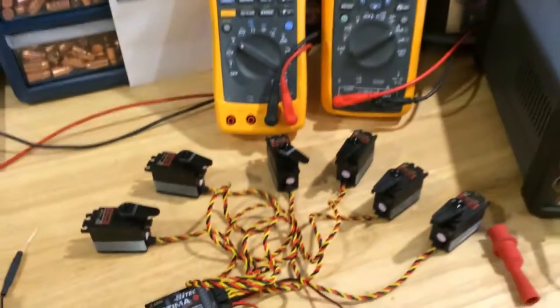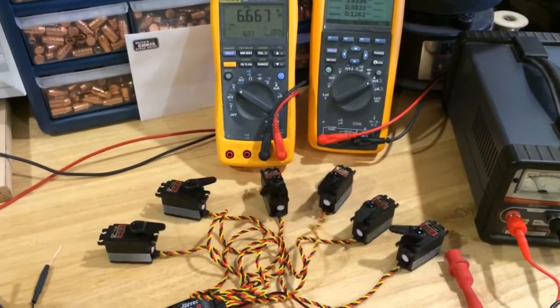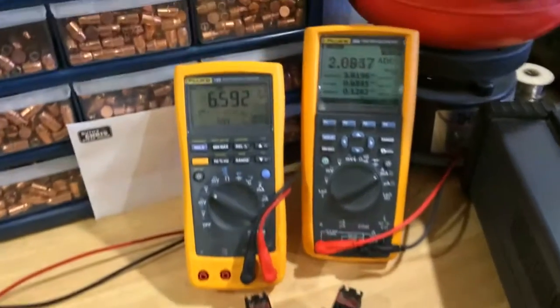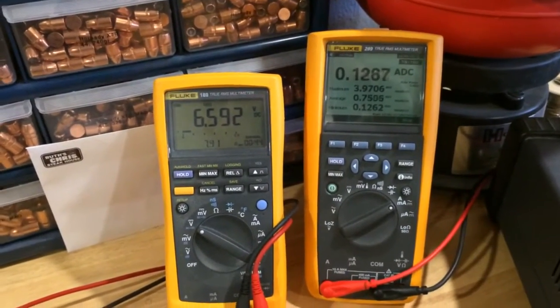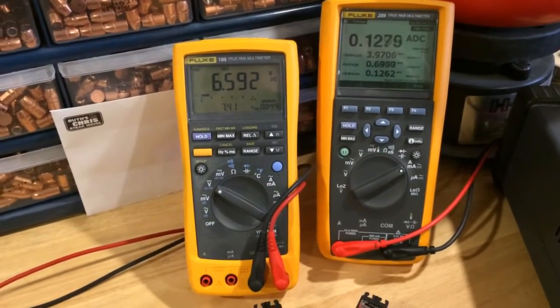So if I move all of the servos around, we can see we've peaked at 3.97, so 4 amps. And our voltage has dropped to 6.59 volts.